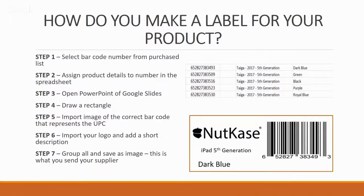Step three — this is how I personally create my labels, though you can use various other software. Open PowerPoint or Google Slides and draw a rectangle — it doesn't matter what size, just keep it reasonable. Then import the image of the correct barcode that represents the UPC you're using. So over here, for the dark blue, I would go into the 12-digit JPEG graphics, select that particular number, and import it into PowerPoint. Then import your logo — if you haven't got a logo, just type your company name in. And add a short description.